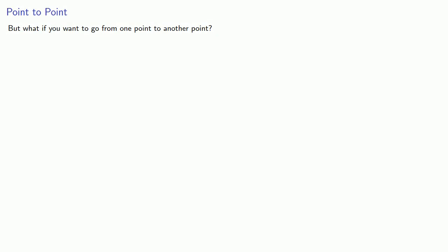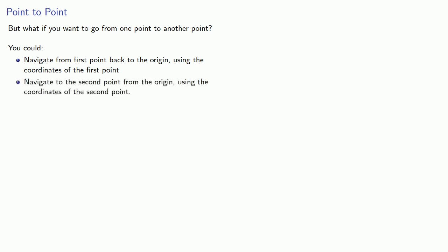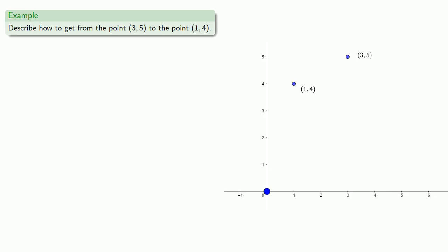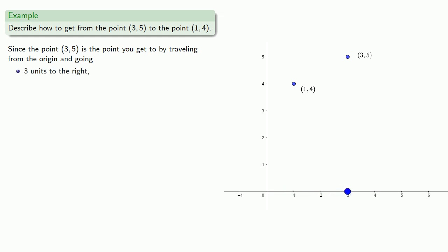But what if we want to get from one point to another point? We could navigate from the first point back to the origin using the coordinates of the first point, and then navigate to the second point from the origin using the coordinates of the second point. So let's say I want to get from the point (3, 5) to the point (1, 4). Since the point (3, 5) is reached by traveling from the origin three units to the right and five units upward, we can reverse these steps to get back to the origin.